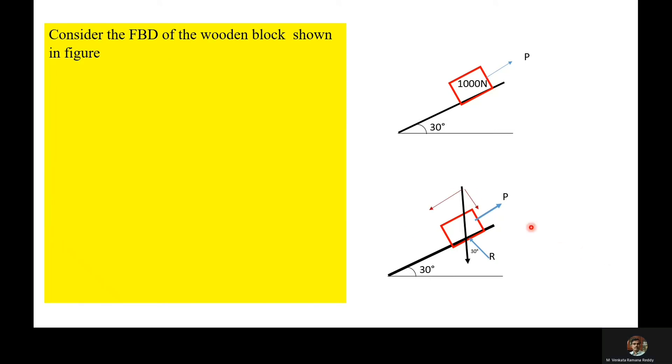We have W cos 30° and W sin 30°. Here W value is 1000 newtons. As the block tends to move up, the frictional force acts downward direction along the incline.